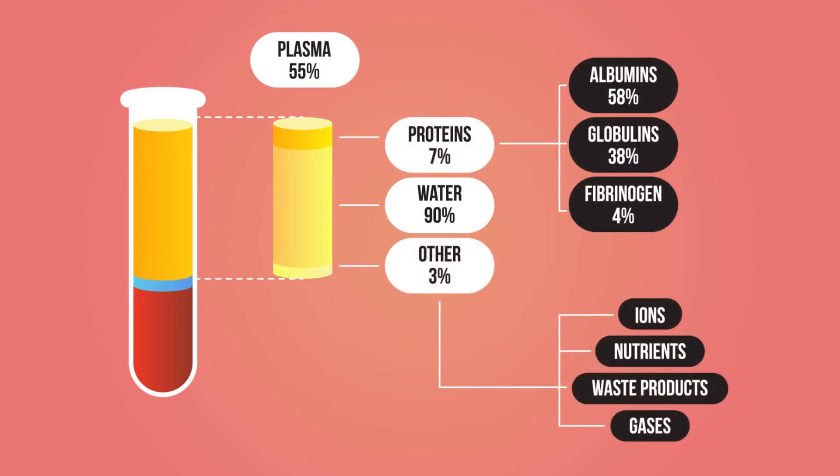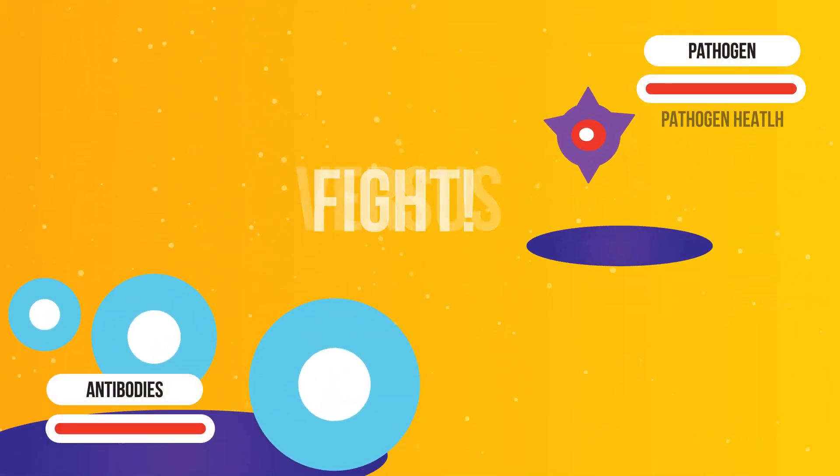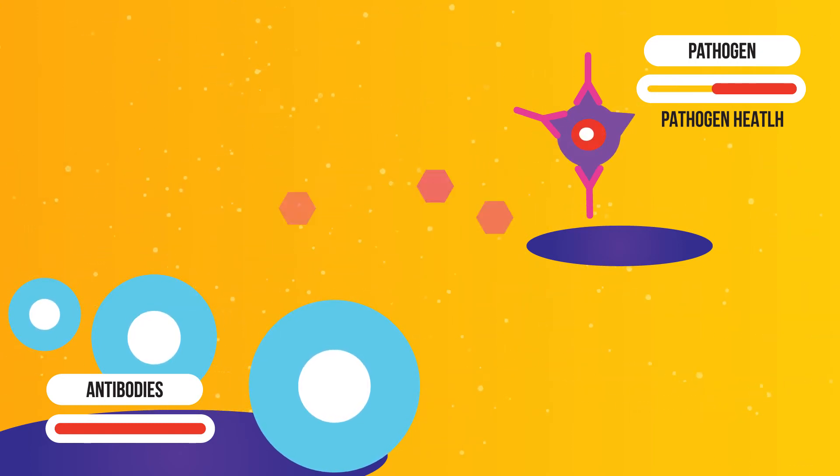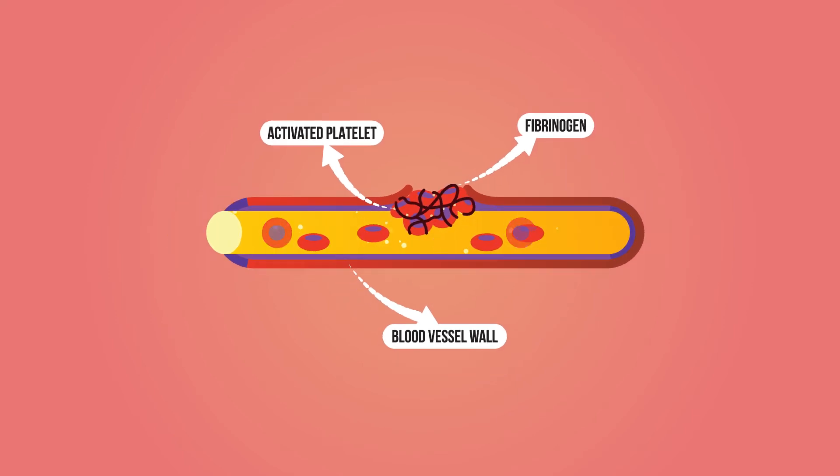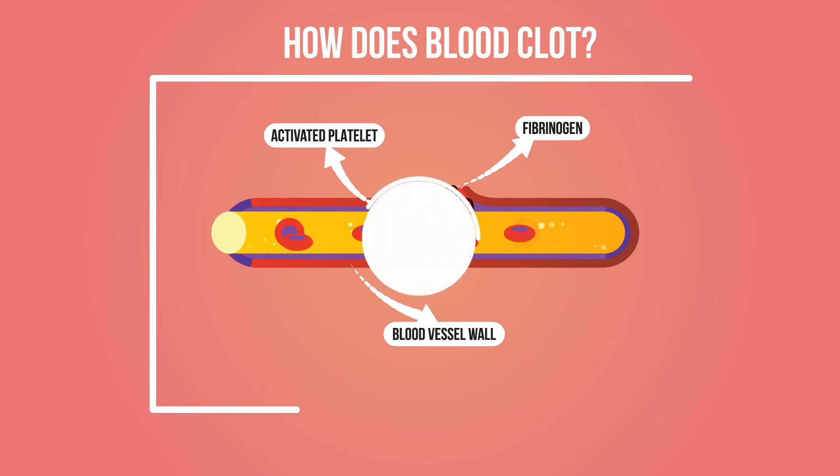Some of these proteins in the blood plasma are involved in defense. These include globulins functioning as antibodies which are used to fight infection, and fibrinogen which helps to form clots to seal wounds. To learn more about how blood clots, watch this video.